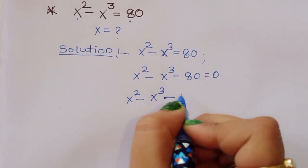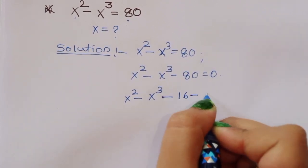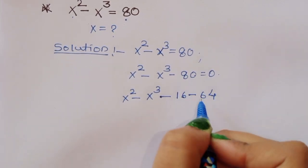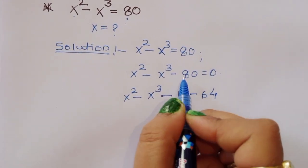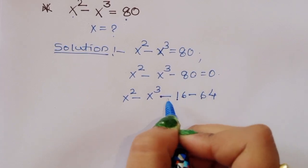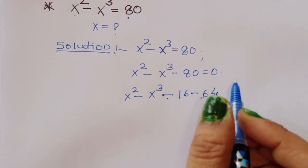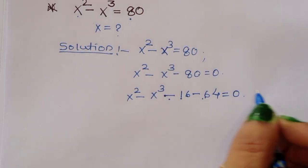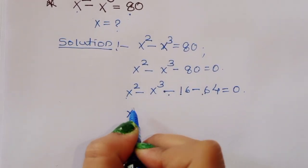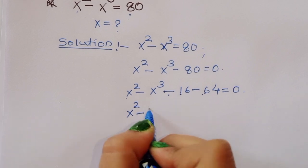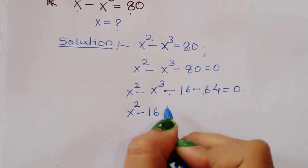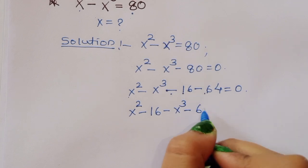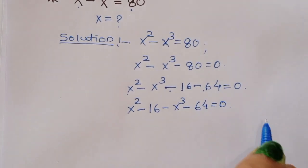Now x squared minus x cubed minus 80 — we can write minus 80 as minus 16 minus 64, because 16 plus 64 is 80. So minus 16 minus 64 equals minus 80. This gives us x squared minus 16 minus x cubed minus 64 is equal to 0.